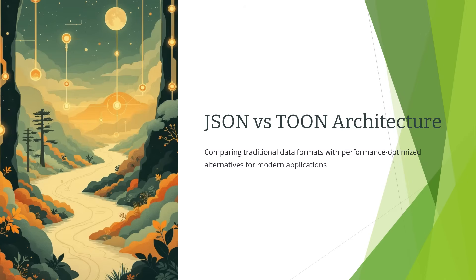We are diving into two important data formats: JSON and TOON architecture. While JSON is something most developers are familiar with, TOON — which stands for Token Oriented Object Notation — is a more specialized architecture that combines object-oriented principles with efficient token-based data representation. Think of real-time gaming, IoT devices with limited bandwidth, or high-frequency trading platforms where every millisecond and every byte matters.